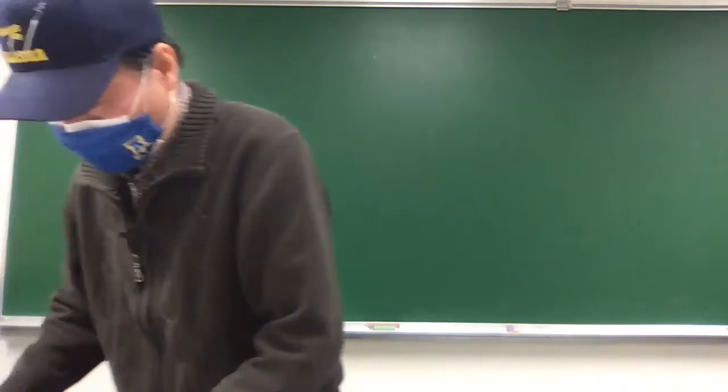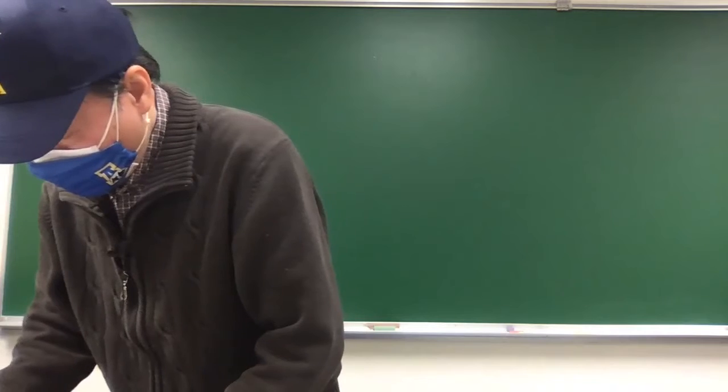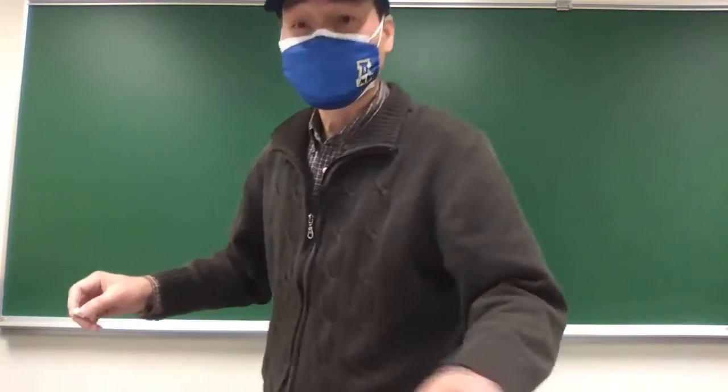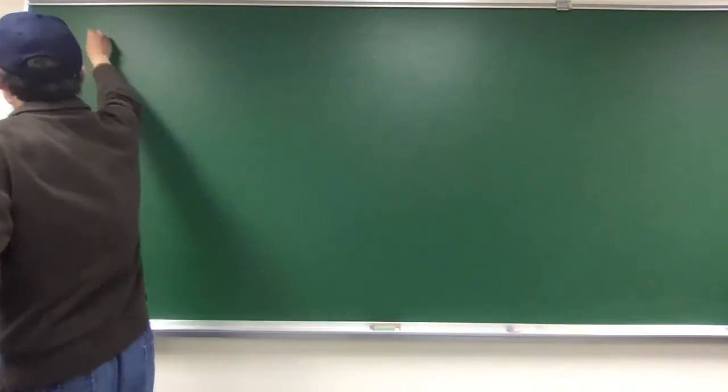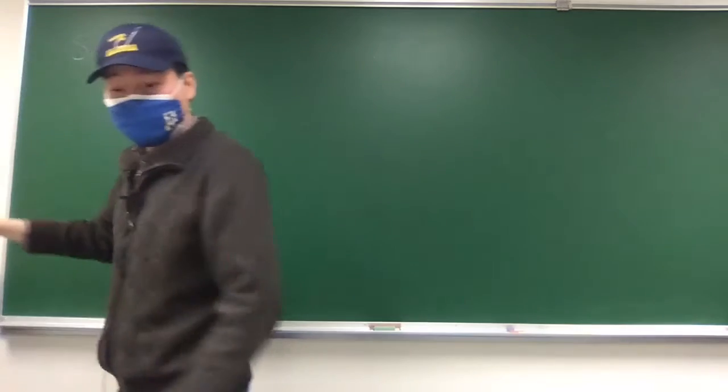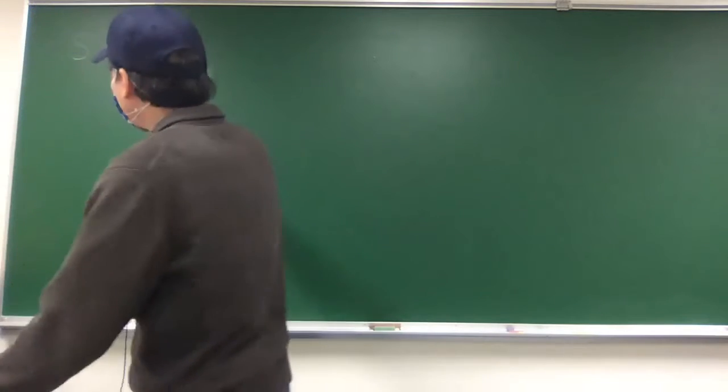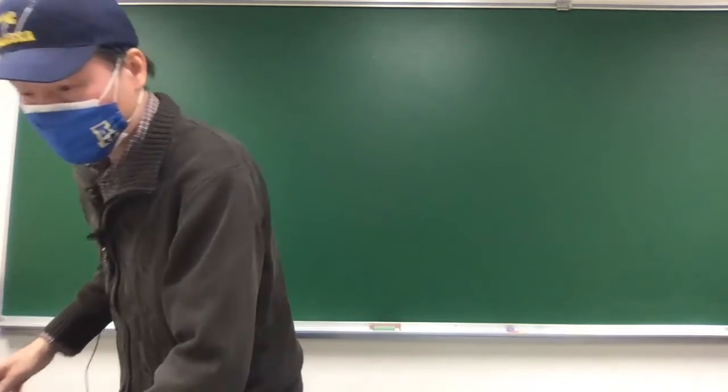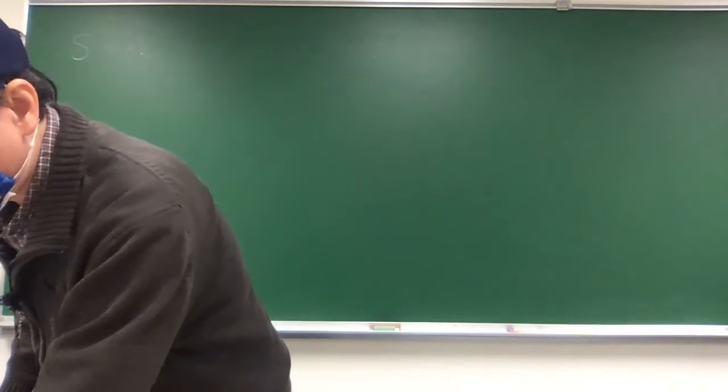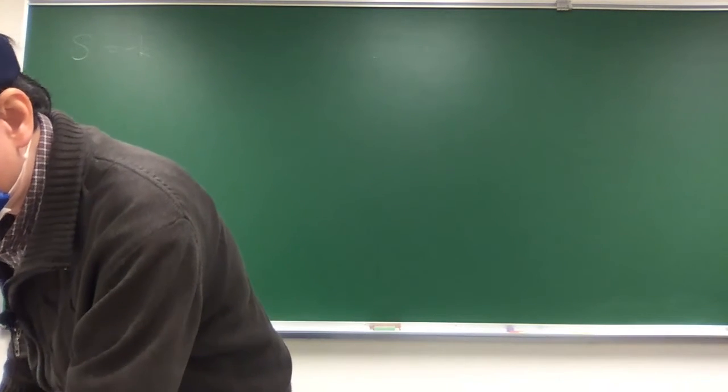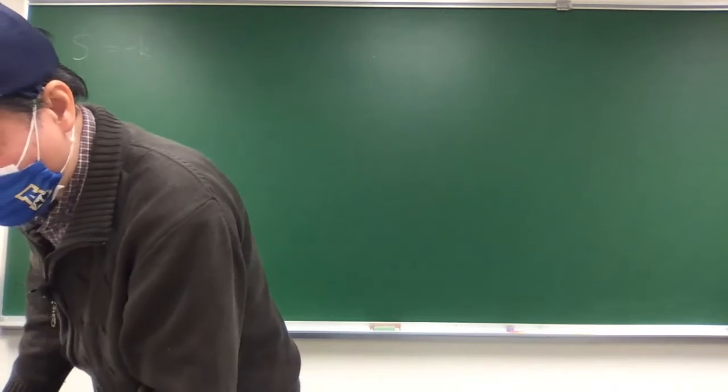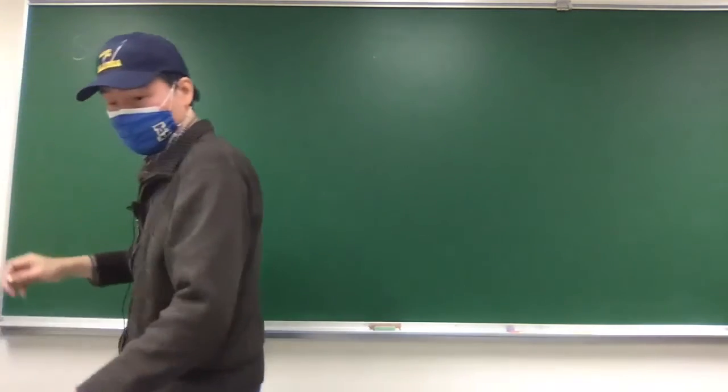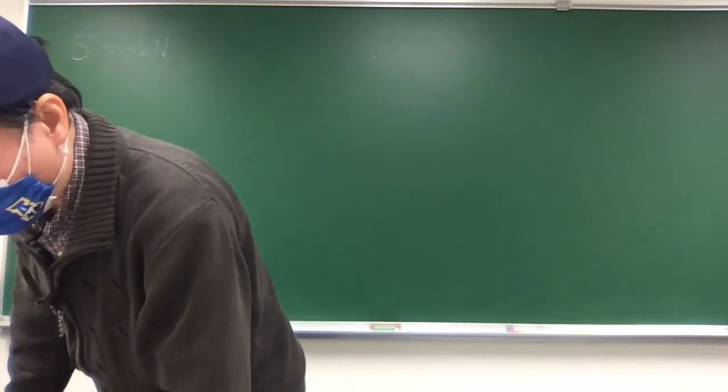So the entropy is, I just copy it. S is entropy, minus k. K should be the Boltzmann constant, and then n is the number of particles, total number of particles.